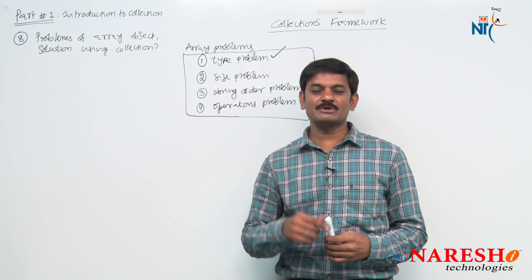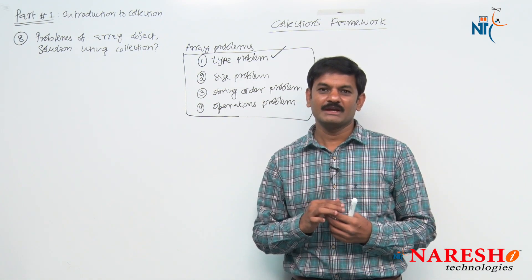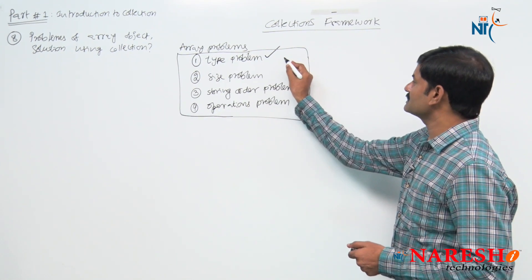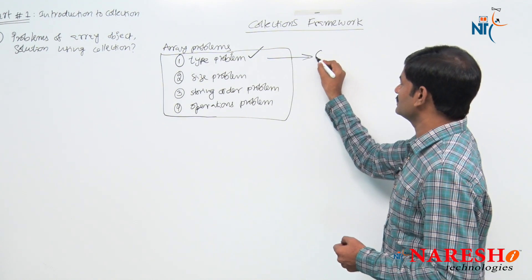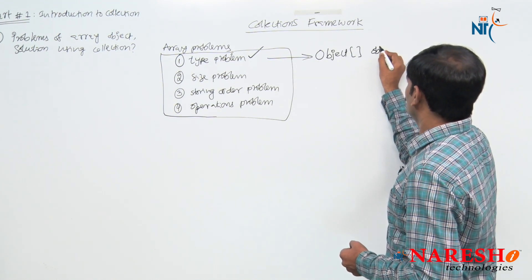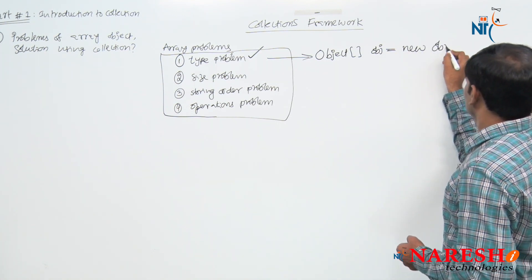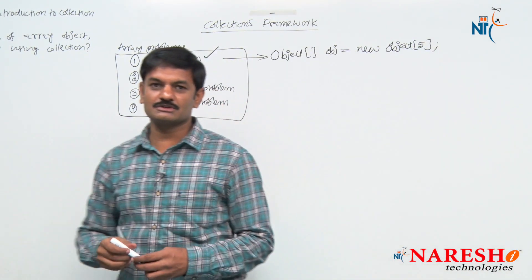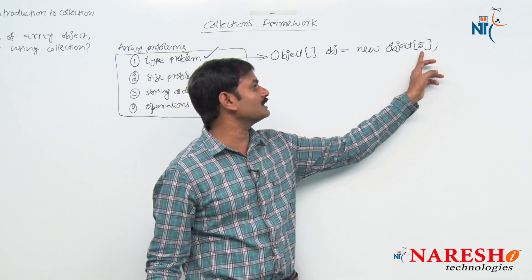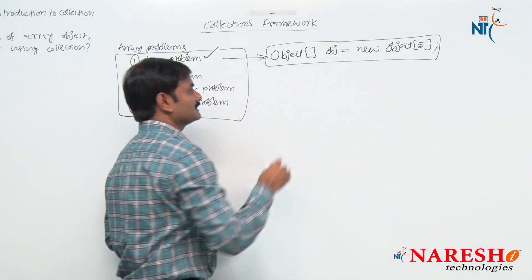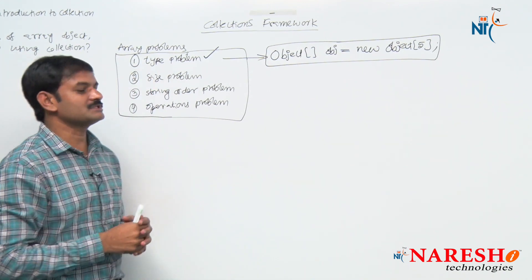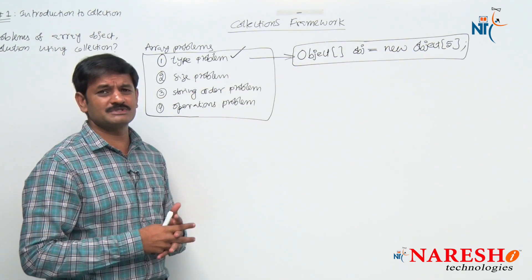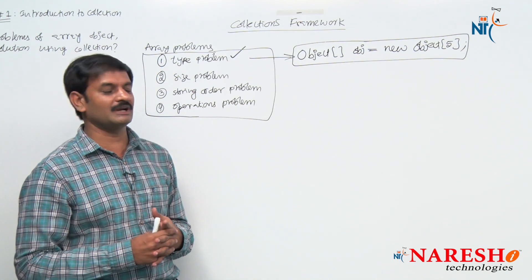To solve this type problem, you must take a parent class type array. The super class of all Java classes is Object class. So the conclusion from the previous session: Object[] obj = new Object[some number]. With an Object class array, any type of object you can store — Student object, Employee object, Lion object, Tiger object, Bike object, Bus object — any Java objects including all 8 primitive values you can store.